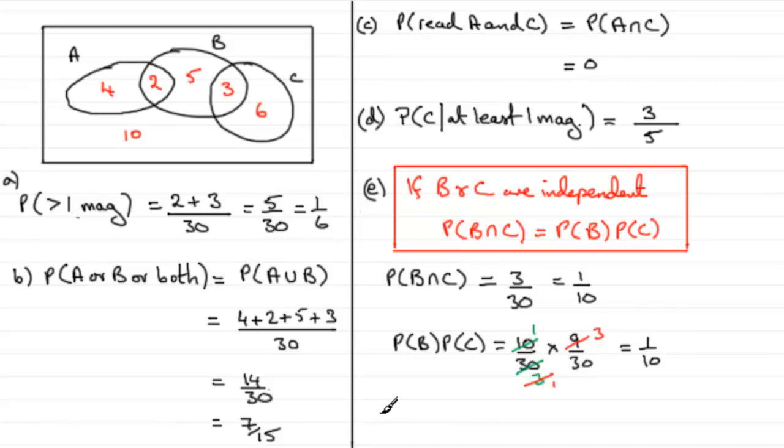And so you can see that therefore the probability of B intersected with C does equal the probability of B multiplied by the probability of C. So the implication of this is that they are independent. And that's how I would go about answering that particular question. So I hope that's given you an idea then about how to do this. That brings us to the end now of this particular question.